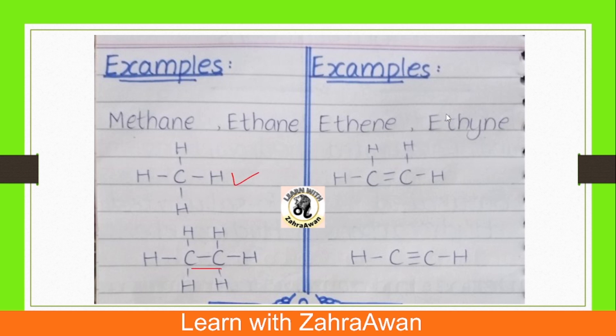Looking at alkynes as an example — alkynes are unsaturated hydrocarbons where carbon and carbon are joined by a triple bond.